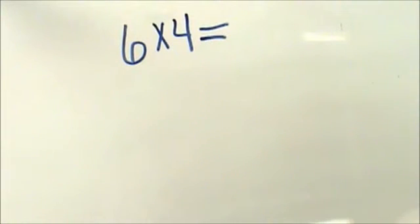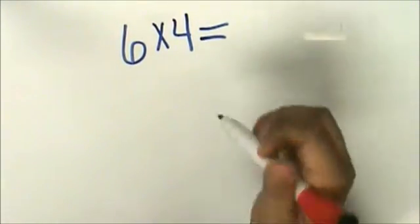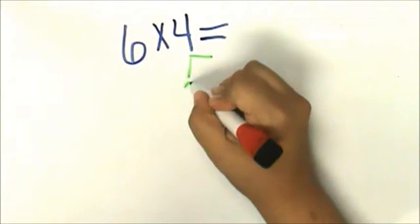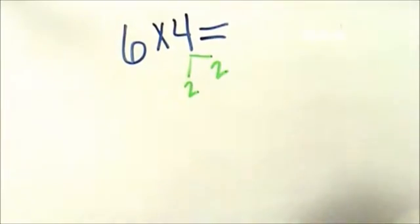Let's try another example. This time, I have 6 times 4. Let's decompose 4 into 2 and 2 because I know my twos facts or I can skip count by twos quickly.